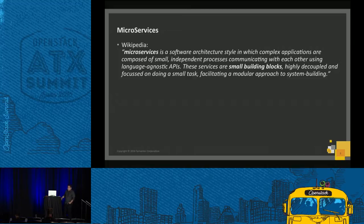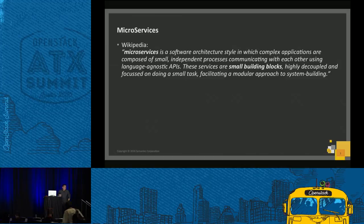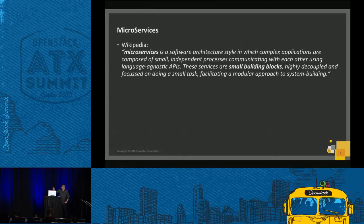The other key point of microservices is that they're pretty much independent of each other and communicate through APIs. They don't need to directly access another piece of code because you can just request it. So if the other piece of code changes, as long as you have the API, you can still use it. That's the whole point of microservices.